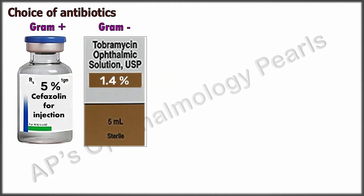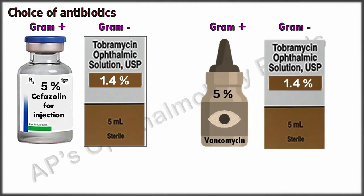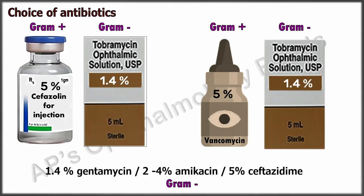Alternatively, 5% vancomycin may be used for gram-positive organisms; however, unless specifically indicated, cefazolin is preferred as it is less toxic to the ocular surface. Alternatively, for gram-negative organisms, 1.4% gentamicin, 2 to 4% amikacin, or 5% ceftazidime may be used.